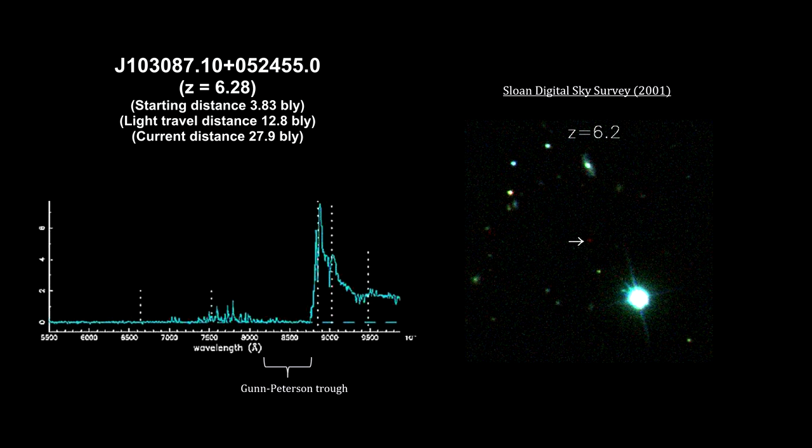It wasn't until the summer of 2001 when Robert Becker from the Lawrence Livermore National Laboratory in California led a team of astronomers that examined the spectrum of this distant quasar located by the Sloan Digital Sky Survey. Its light traveled 12.8 billion light years to get here. They found an unmistakable Gunn-Peterson trough in the quasar's spectra. Its trough was shifted from the ultraviolet into the infrared.